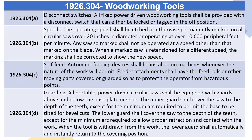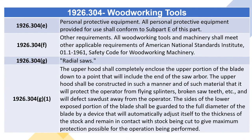1926.304(c) Self-Feed: Automatic feeding devices shall be installed on machines whenever the nature of the work will permit. Feeder attachments shall have the feed rolls or other moving parts covered or guarded so as to protect the operator from hazardous points. 1926.304(d) Guarding: All portable power driven circular saws shall be equipped with guards above and below the base plate or shoe. The upper guard shall cover the saw to the depth of the teeth except for the minimum arc required to allow proper retraction and contact with the work. When the tool is withdrawn from the work, the lower guard shall automatically and instantly return to the covering position.